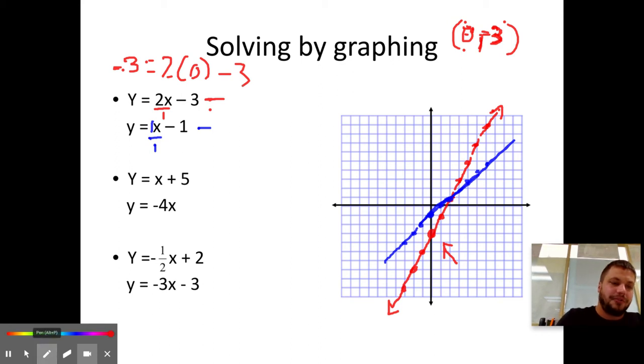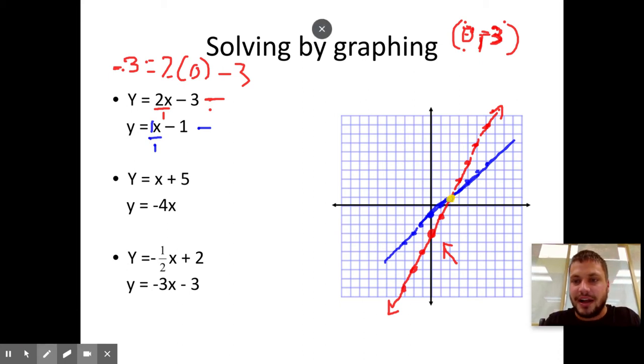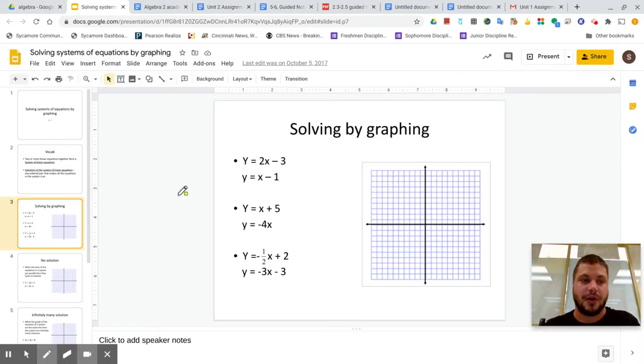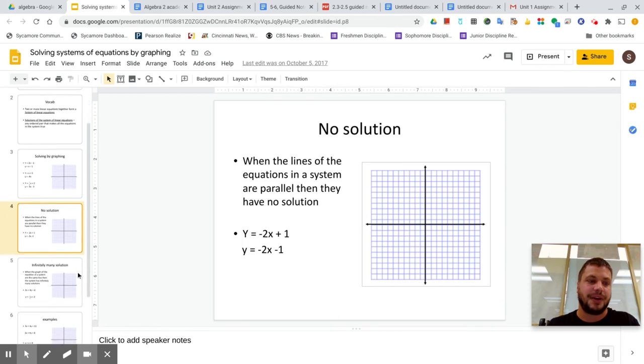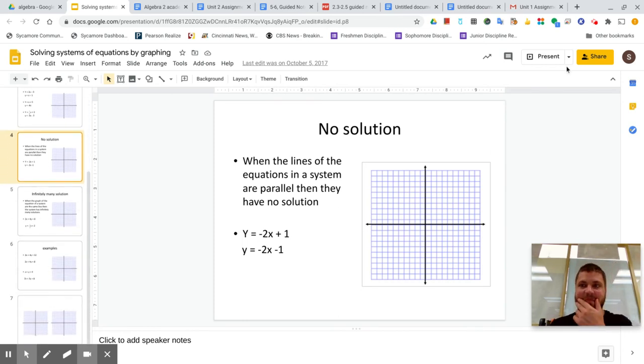Any point that's not on the red line would not make the red equation true. It would make the red equation false. So every point on the red line makes the red equation true. Every point on the blue line makes the blue equation true. Which point makes them both true? Well, it's the only point that they share, which is this intersection point right here. So the answer is where the two lines intersect, which in this case would be two comma one. All right, if you need more examples of that, let me know when you're in class. But it was really just graphing y equals mx plus b lines. So let's talk about some special case solutions.